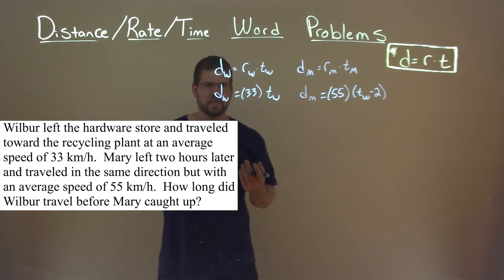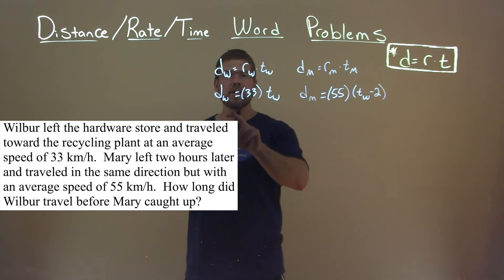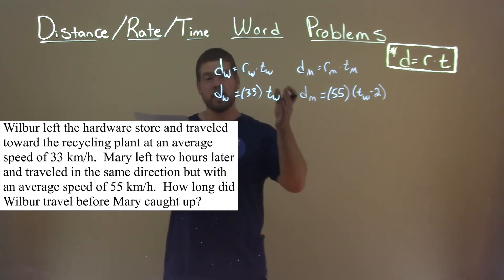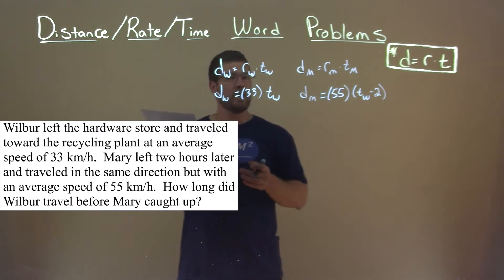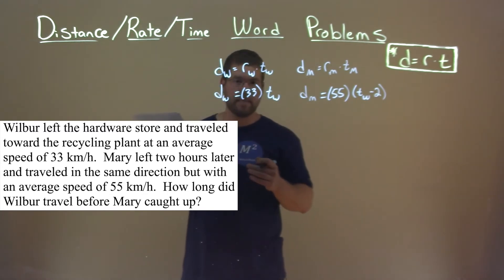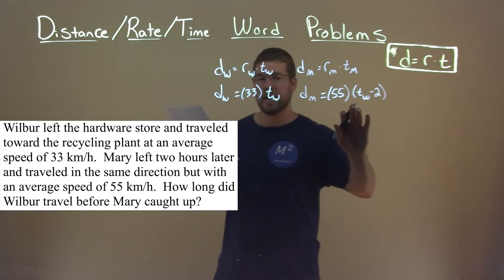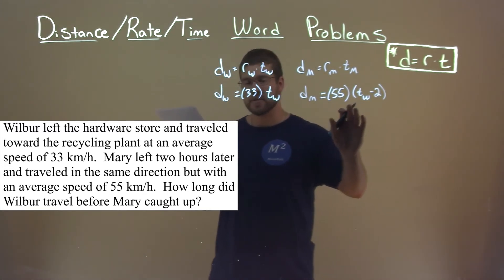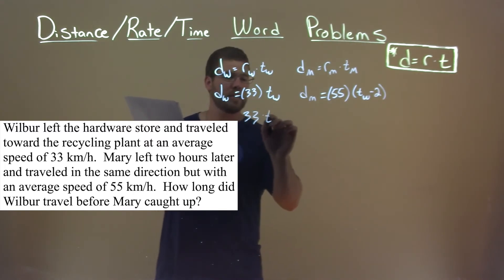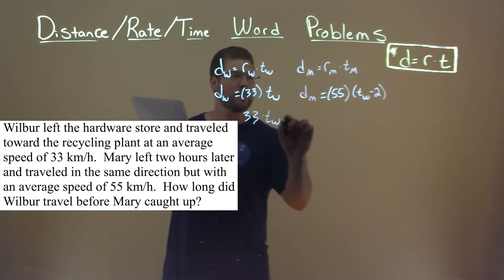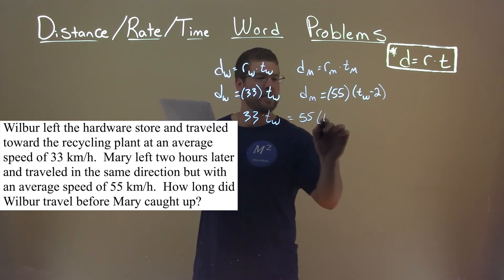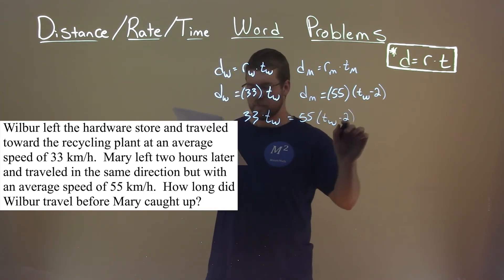So where do we go from here? Because we're finding where Mary caught up to Wilbur, that distance is going to be overall the same. So we can set these two equations equal to each other: 33 times T sub W is equal to 55 times T sub W minus 2.